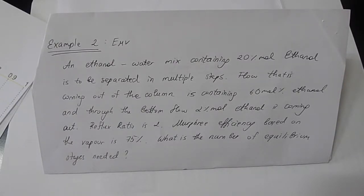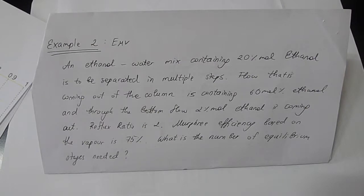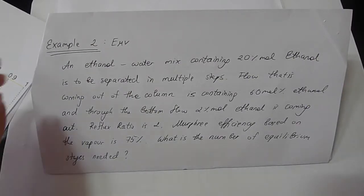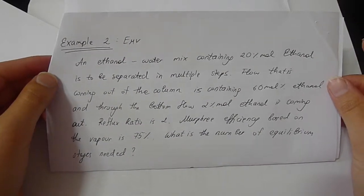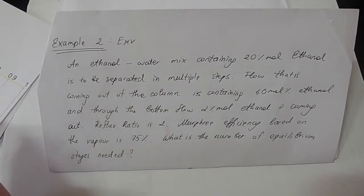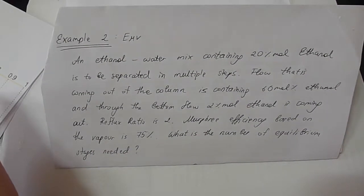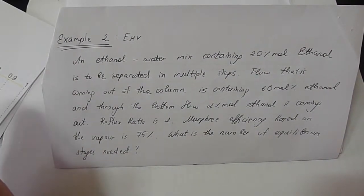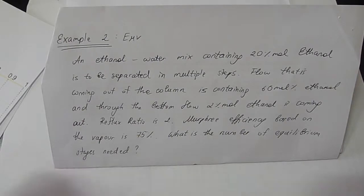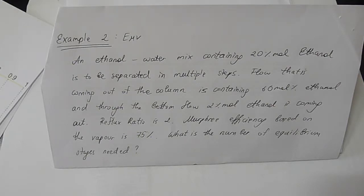Example 2 is using the Murphree efficiency number. The example is ethanol and water mixture. I'll read the problem. An ethanol water mix containing 20 mol% ethanol is to be separated in multiple steps. Flow that is coming out of the column in the distillate is 60 mol% ethanol.